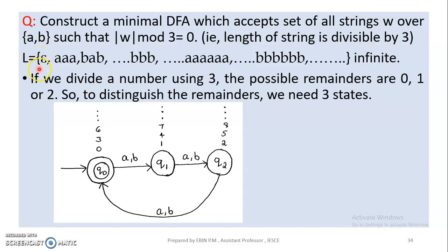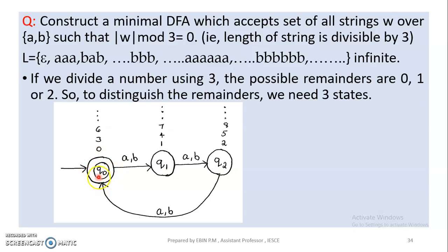If we divide the number using 3, we can create a finite automata. The length of the string with Epsilon — if the string length mod 3 equals 0, the remainder is 0. We can therefore construct the finite automata.